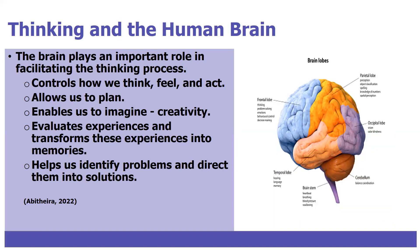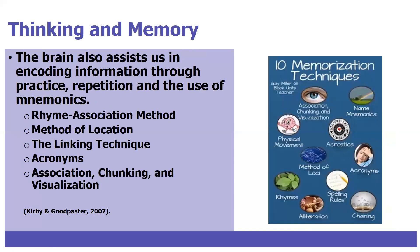Without the brain, thinking would not be possible. The brain plays an important role in facilitating the thinking process. For example, the brain controls how we think, feel, and act — it allows us to plan, enables us to imagine, evaluates our experience, and transforms these experiences into memories. Most of all, the brain also helps us to identify problems and directs them into solutions.